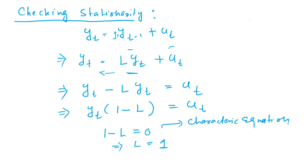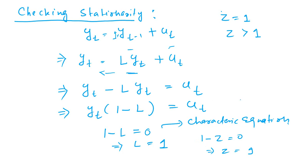The criteria for the series being stationary is that the roots of the characteristic equation — you can write z instead of L — should be outside the unit circle. That means z should be greater than 1. The unit circle has a radius of 1, so anything greater than that satisfies the condition. But here z equals 1.